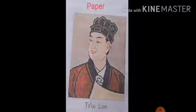Paper was first made and used around 105 AD in China. The person credited with the invention of paper is a Chinese named Cai Lun. With the invention of the printing machine, the demand for paper increased for printing various books.